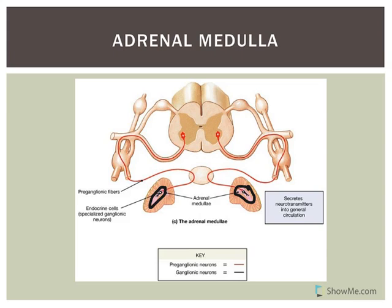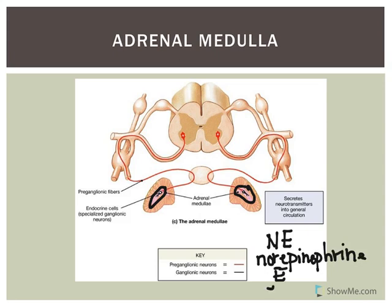These specialized neurons actually secrete hormones into the bloodstream. They secrete norepinephrine (NE) and epinephrine (E). Most of what's released by the adrenal medulla is epinephrine.